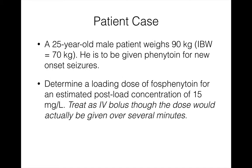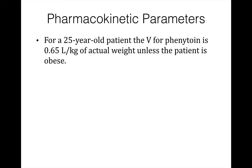We're going to treat it as if it's given as an IV bolus, though the dose would actually be given over several minutes. Due to the low clearance of phenytoin, the impact of using the IV bolus formulas over one that allows for an infusion is very limited. For a 25-year-old, the volume of distribution for phenytoin is 0.65 liters per kilogram of actual weight unless the patient is obese. So to determine that pharmacokinetic parameter from the population for this patient, we're going to first determine if the patient is overweight or obese.